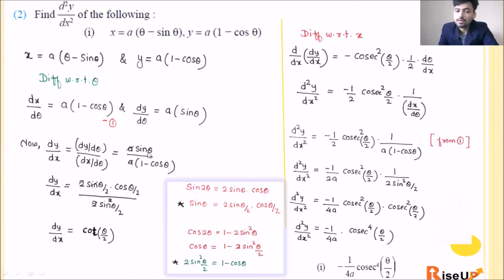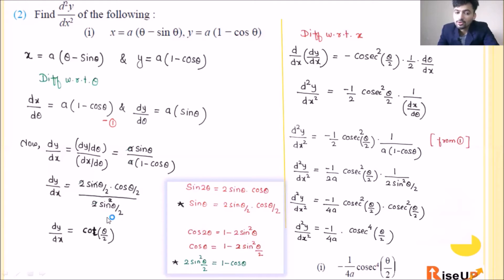Now we apply trig formulas. sinθ = 2·sin(θ/2)·cos(θ/2), and 1 − cosθ = 2·sin²(θ/2). So dy/dx = [2·sin(θ/2)·cos(θ/2)] / [2·sin²(θ/2)], which simplifies to cos(θ/2)/sin(θ/2). cos upon sin is cot, so dy/dx = cot(θ/2).